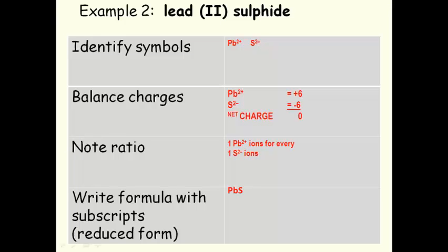How about lead (II) sulphide? Lead (II) sulphide uses the other ion charge of lead. If you think back to the periodic table, there are two different ion charges for lead. In the previous example, the Pb4+ ion was used. In this example, it's Pb2+, and we know that because of the Roman numeral.